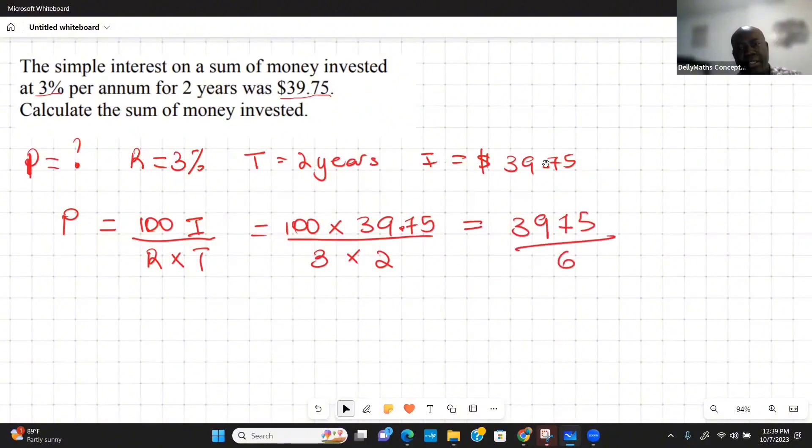So what we have here is $3,975 we want to divide by 6, and it's going to give us that principal amount that was actually invested. Let's take a look: $3,975 divided by 6, and we're getting $662.50. This was the principal P, the sum of money that was invested.